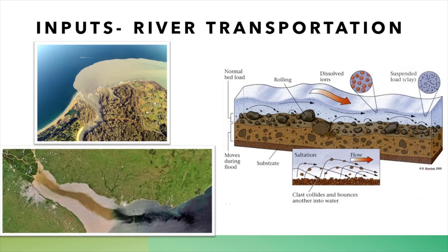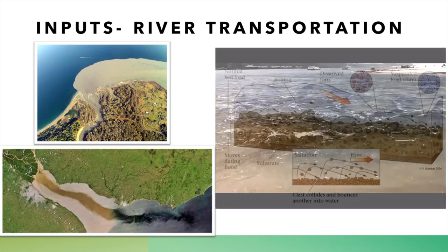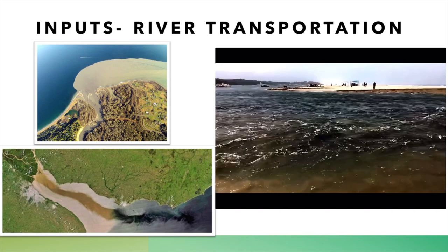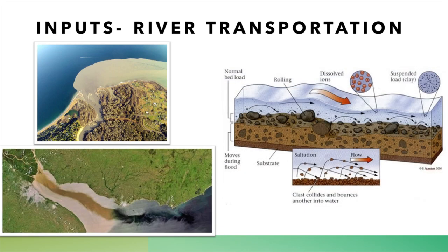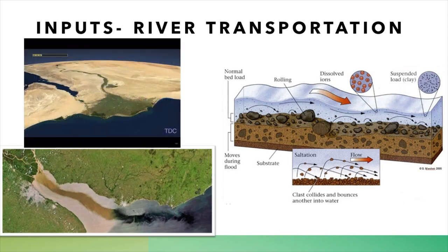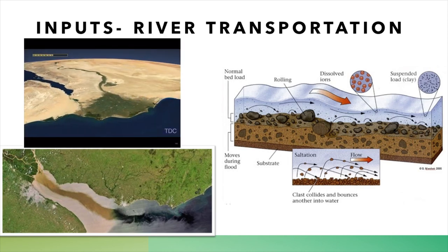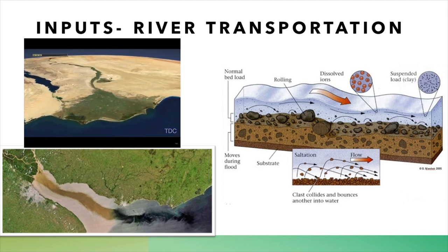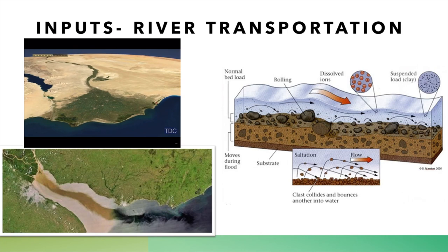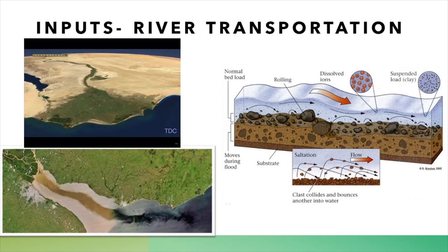The second largest input is river transportation. Particles inside of the river are carried normally through four means: traction, saltation, suspension, and solution. This depends on the size of the particle. As you can see in the photos on the left, it gets transported down the river, and then all of this sediment gets taken into the sea as fine sediment and moved by the waves along the coast.